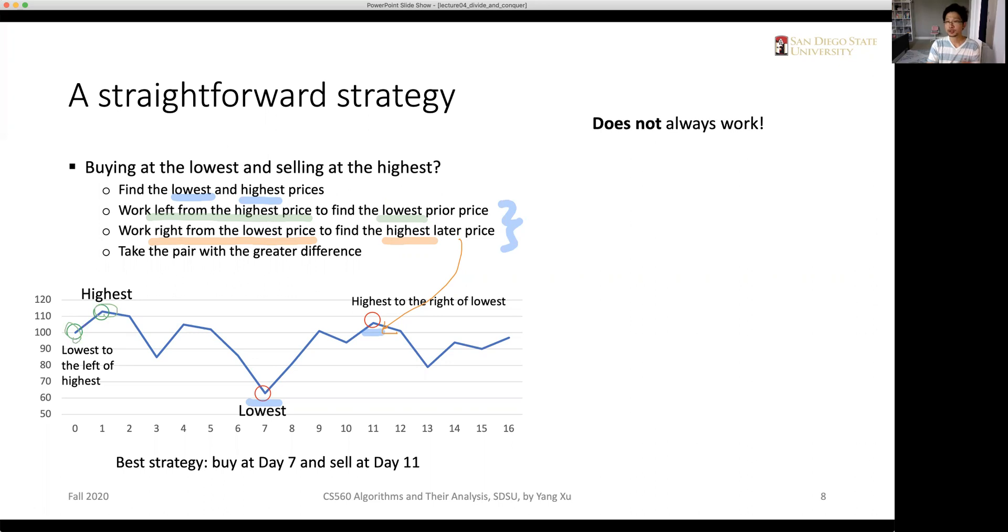But actually, this does not always work. So imagine our price curve looks like this. And where's our highest and lowest points? They're indicated by the dash line. But if we find the highest points and work from the left of it, there's only day one exists. So we only can choose this one. And if we choose the lowest, we choose to buy in at lowest points, but there's no future date to sell. So this basically doesn't work.